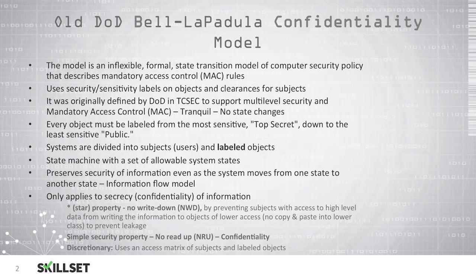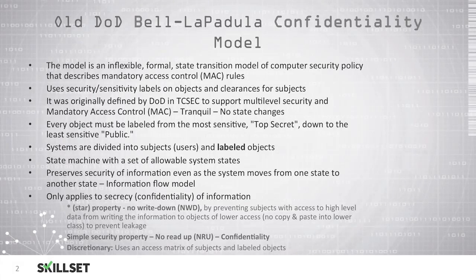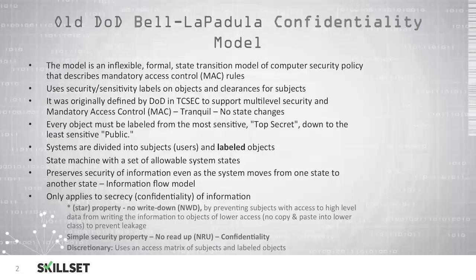We also have the simple security property, which prohibits reading up for confidentiality. So a user who has secret clearance is not permitted to read anything above that level, such as at the top-secret level. It uses an access matrix of subjects and objects with their labels to determine which subjects are permitted to access which objects.